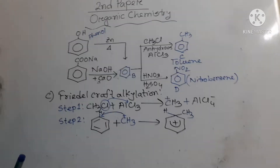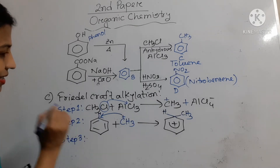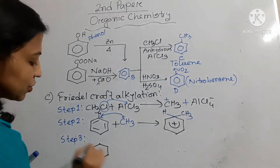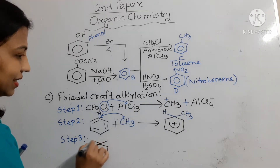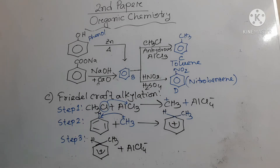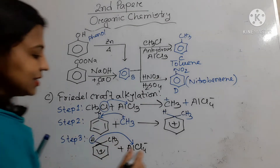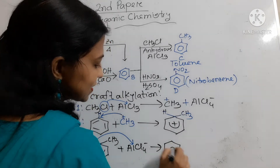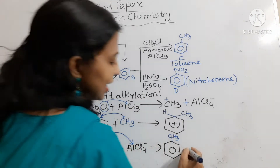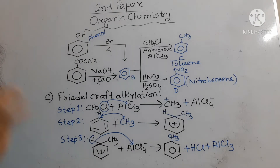In step 3, this positive carbon center in the benzene ring is attacked by AlCl4 minus. The AlCl4 minus attacks this positive carbon center and accepts the hydrogen. As a result, the product formed is toluene, where CH3 has joined to the benzene ring. The hydrogen joins with Cl to form HCl, and aluminium chloride is regenerated. This is the mechanism by which toluene is formed from benzene.